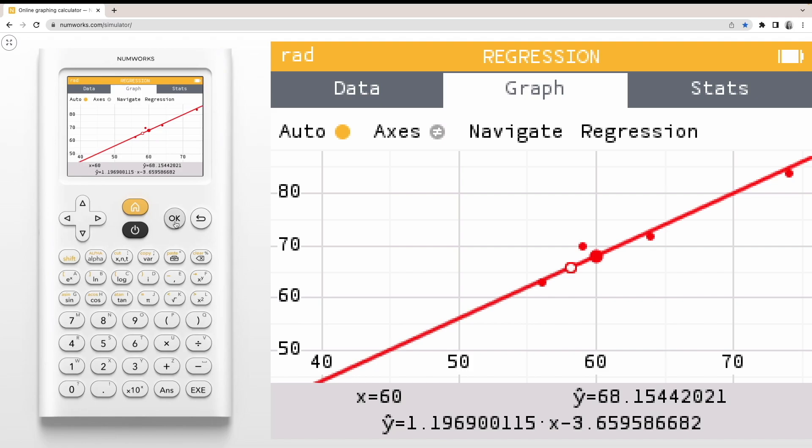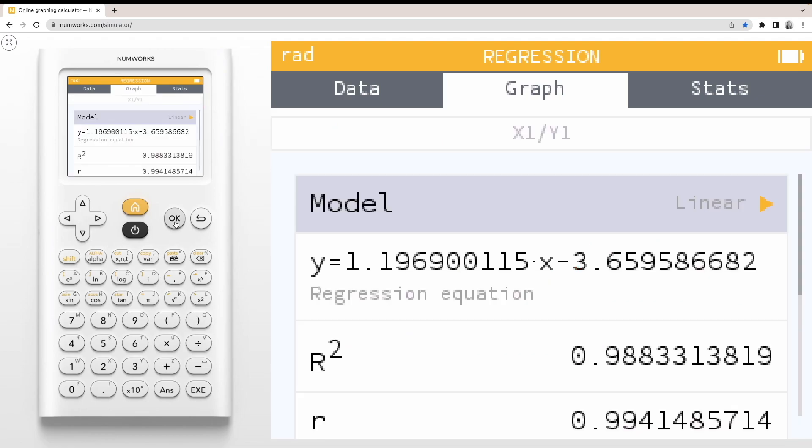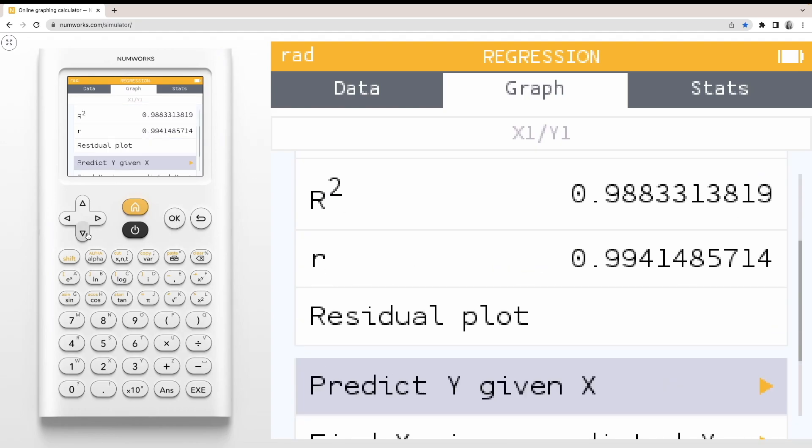Pressing OK or the Toolbox key gives you access to more actions, like changing your model, viewing your regression equation, and even removing your regression.